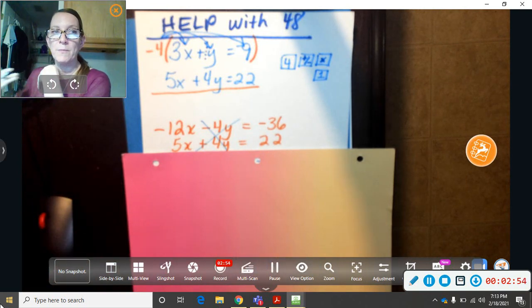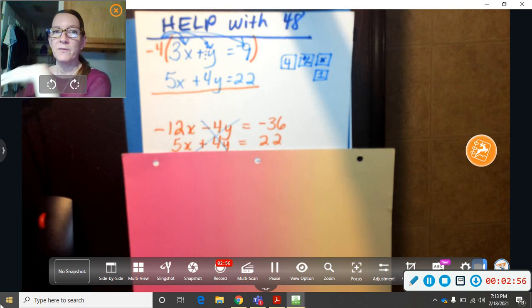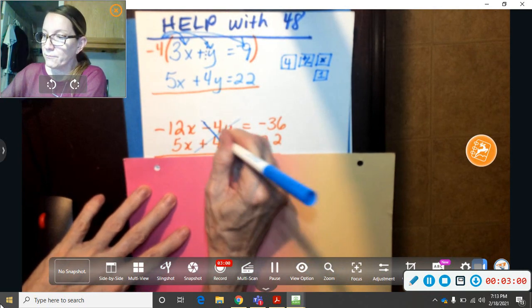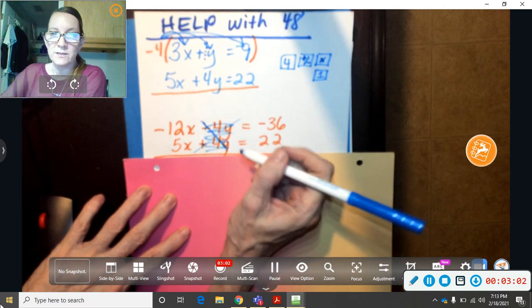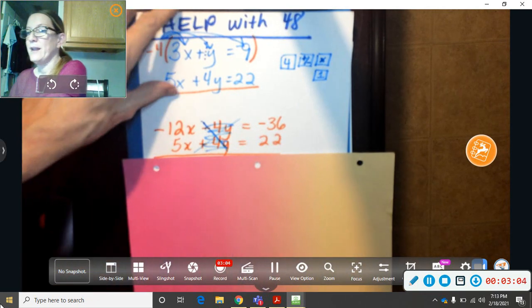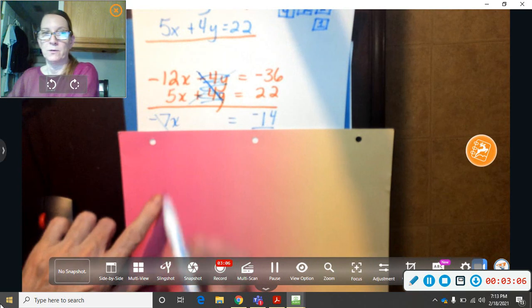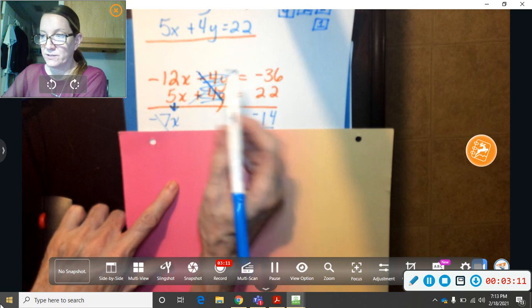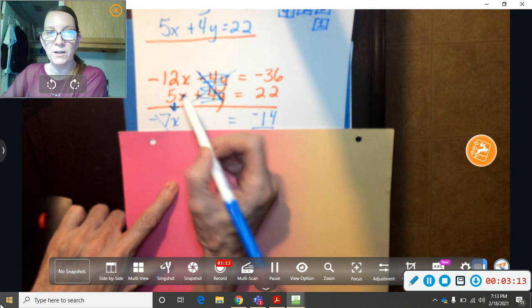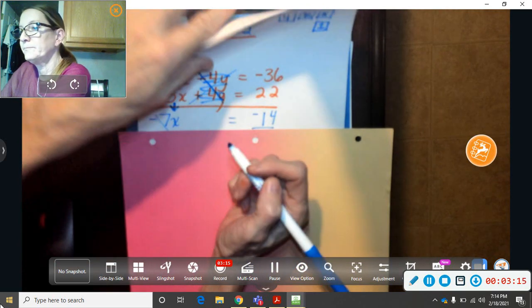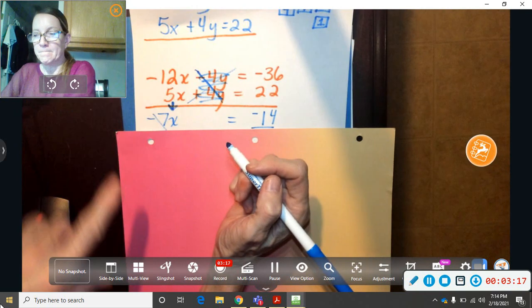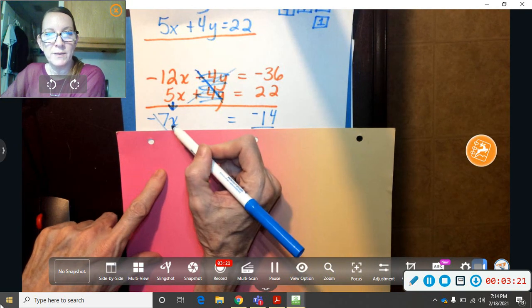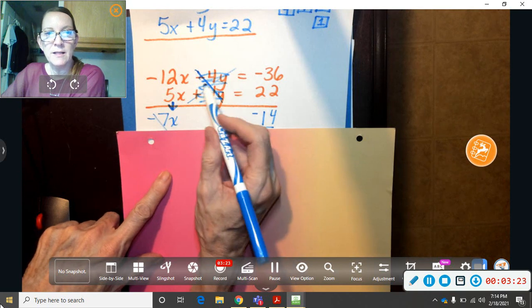Now I can work it, because remember, it's a system of equations, but you can't work x and y's, so you got rid of the y's because they're opposites. So now you can actually work it. And remember, you go down. You go down and add the two equations together. So negative 12 plus 5 in a calculator, negative 12 plus 5 in a calculator would be negative 7x. Those are gone.